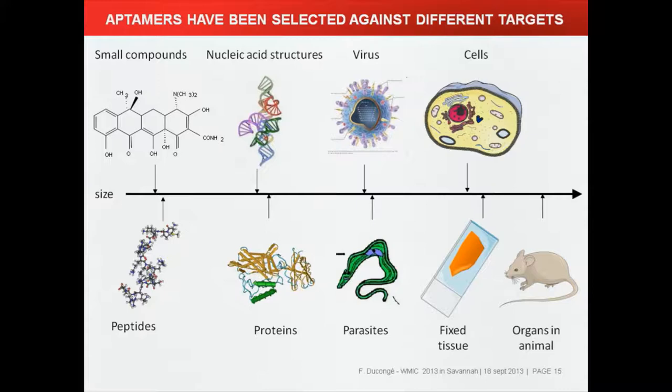Aptamers have been selected against a wide variety of targets: small compounds, peptides, nucleic acid structures, and proteins. Now there are many aptamers selected directly against viruses, cells, parasites, and also fixed tissue from patients. There are two papers describing in vivo biopanning of aptamers in mouse models of tumors and also for aptamers able to target the brain.